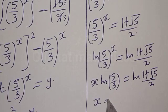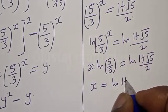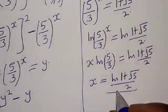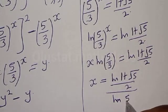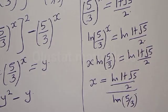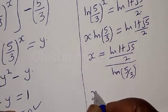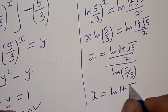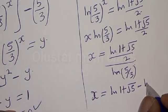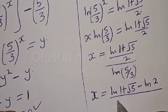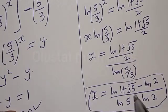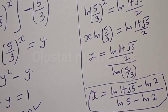Now let's divide both sides by the natural log of 5 divided by 3. We have s is equal to natural log of 1 plus square root of 5 divided by 2, divided by natural log of 5 divided by 3. Our final answer can be written as s is equal to natural log of 1 plus square root of 5, minus natural log of 2, divided by natural log of 5 minus natural log of 3. That is our final answer. If you have enjoyed the class, please don't forget to like, share, comment and subscribe. Thank you.